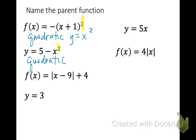f of x equals absolute value of x minus 9 plus 4. Notice that the math around the variable x is the absolute value bars, so this is a transformed absolute value function. y equals 3 — there's no x, just the constant, so that is a constant function. That's the parent function.